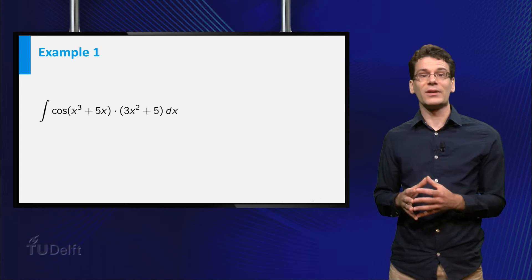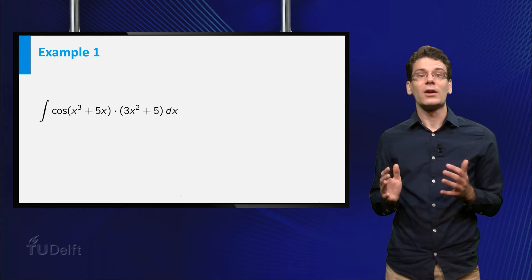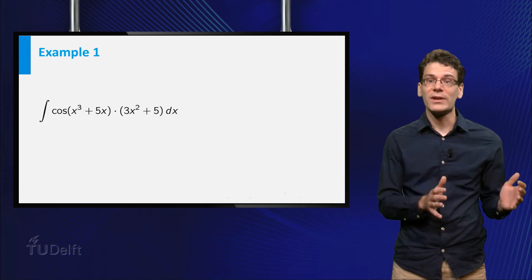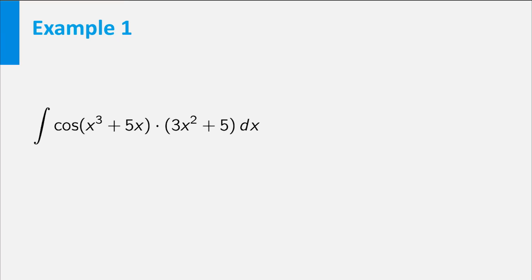Suppose you want to find an antiderivative of the following function: cosine of x cubed plus 5x times 3x squared plus 5. Look at the structure. The first factor is the composition of two functions, a function f of x equal to cosine of x and a function g of x equal to x cubed plus 5x. The second factor is precisely the derivative of g.